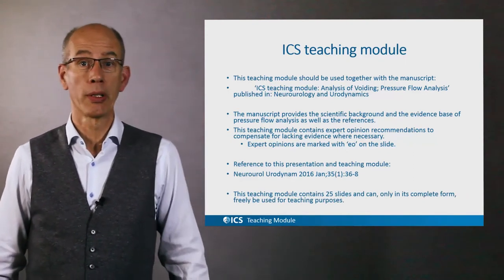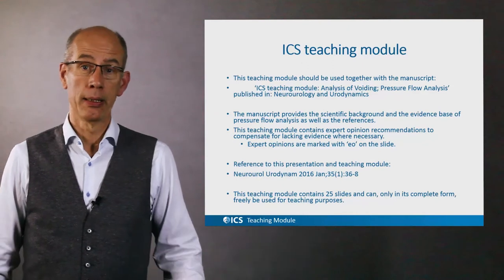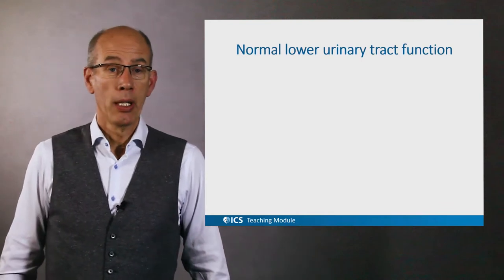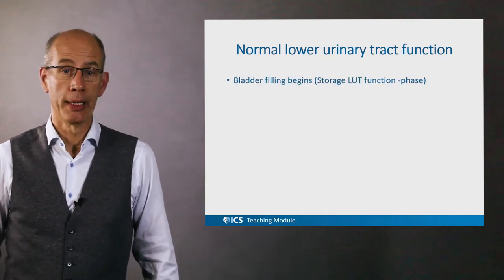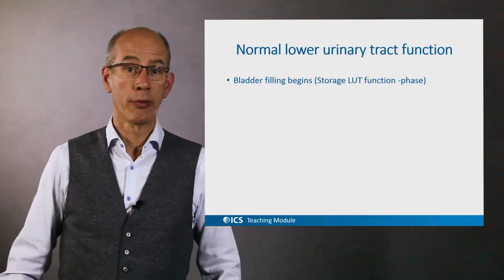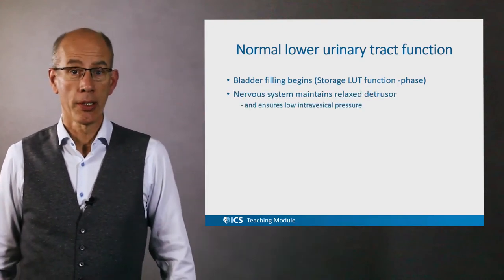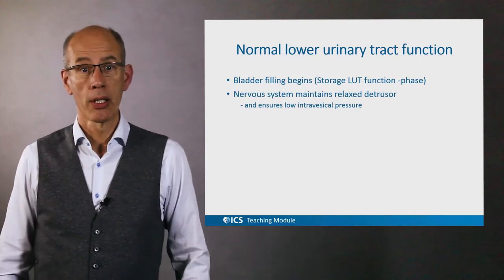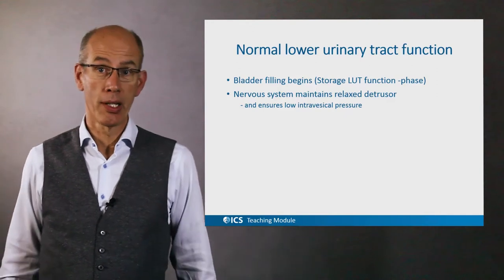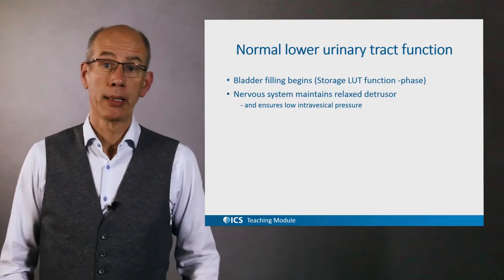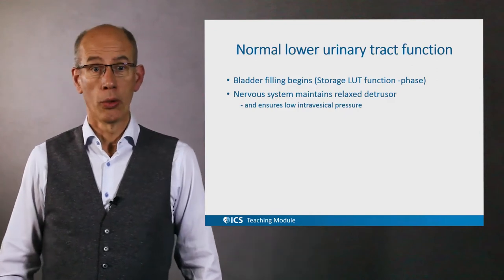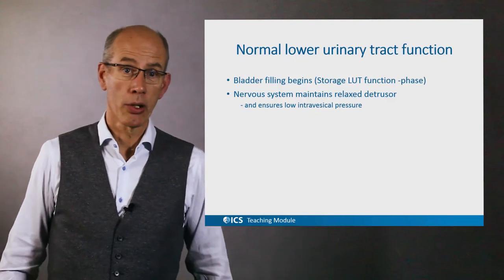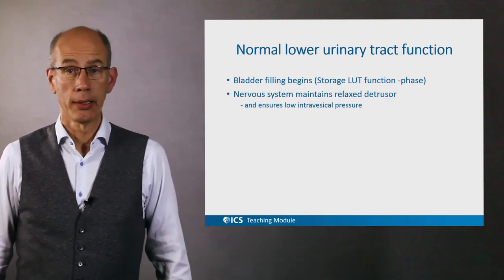This teaching module is 25 slides and should be used in complete form. Normal lower urinary tract function begins with bladder filling. The kidneys produce urine, which fills the bladder and causes it to stretch. The nervous system maintains a relaxed detrusor and ensures low intravesical pressure because the detrusor muscle accommodates to the filling that the kidneys do.